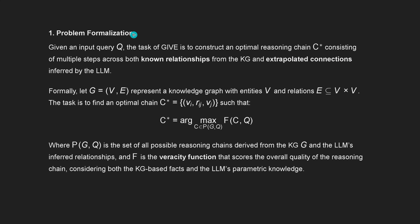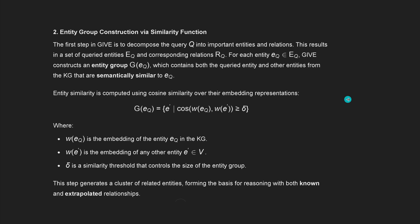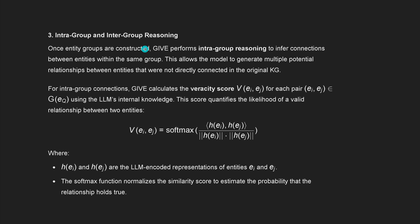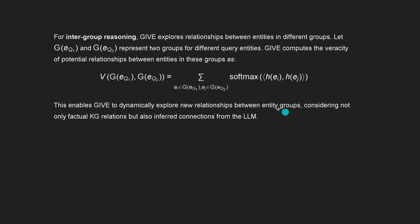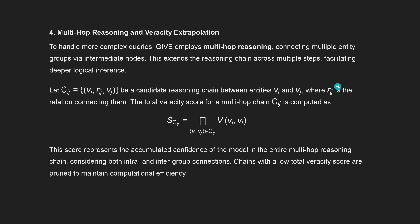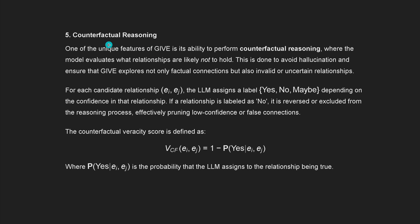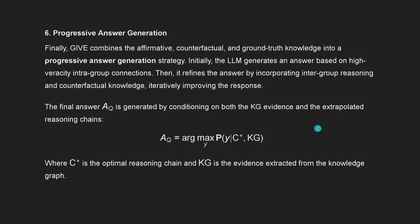This is the output here by GPT-4 Omni. Problem formulation, entity group construction via the similarity function, the intra-group and the inter-group reasoning, how we do this. For the inter-group reasoning, we have this formula. For the multi-hop reasoning and the veracity extrapolation, we go here with a total veracity score for the multi-hop chain computed in this way. Then we have the counter-factual reasoning, and finally the answer generation.